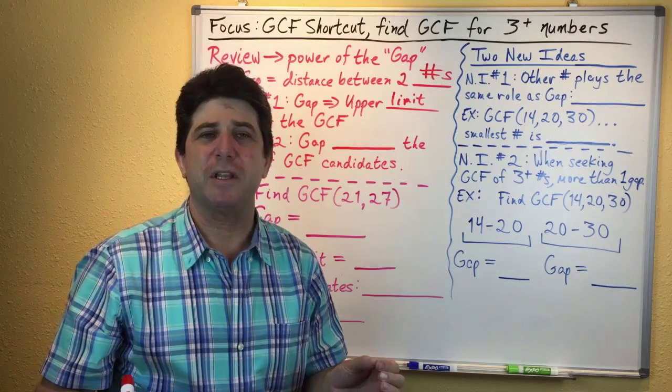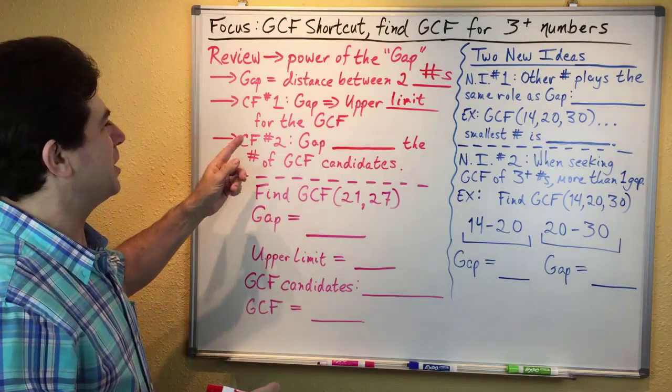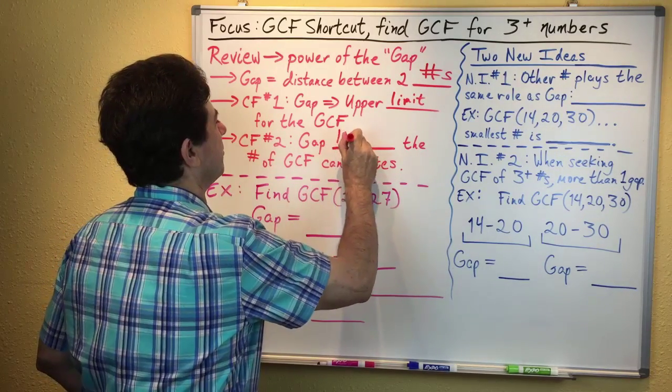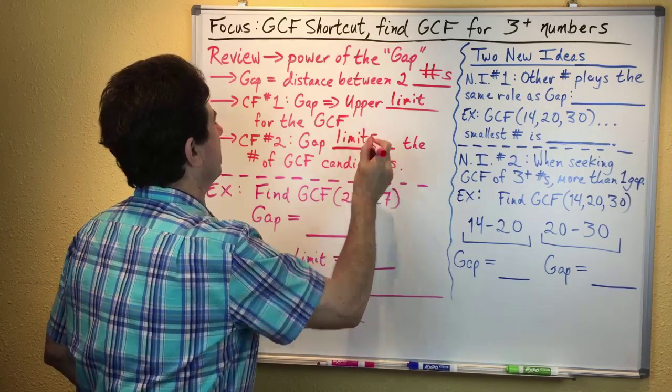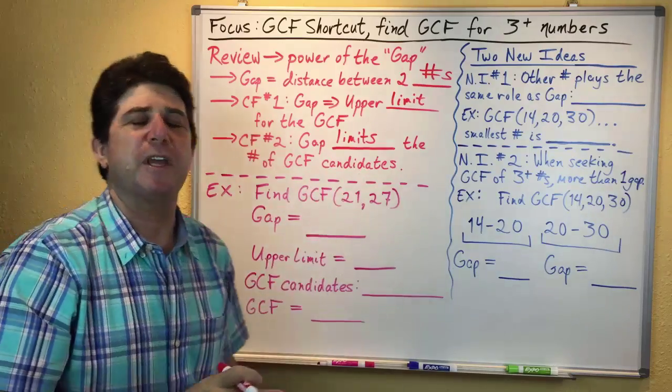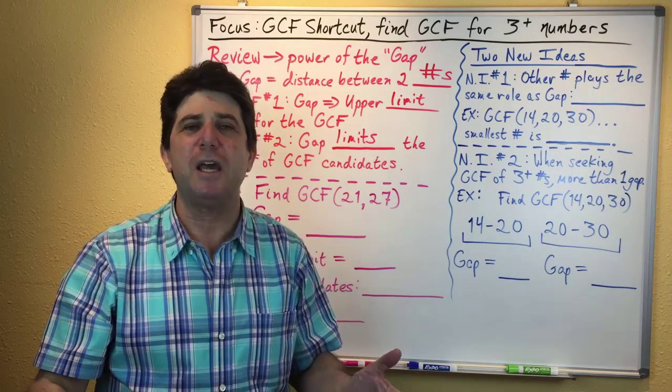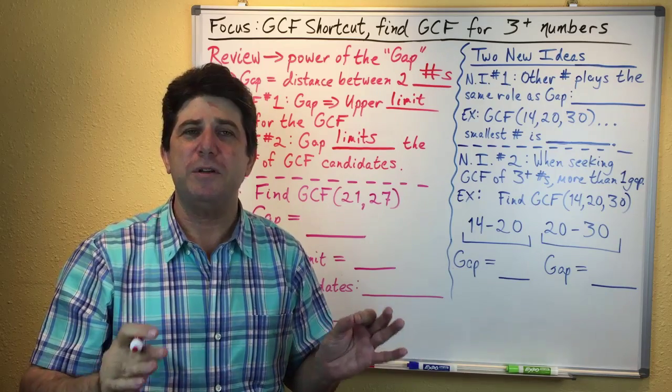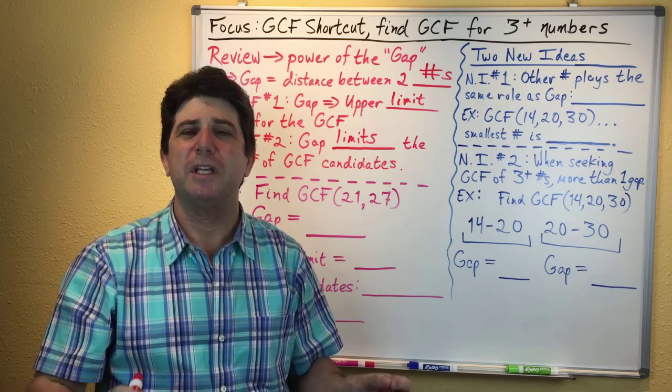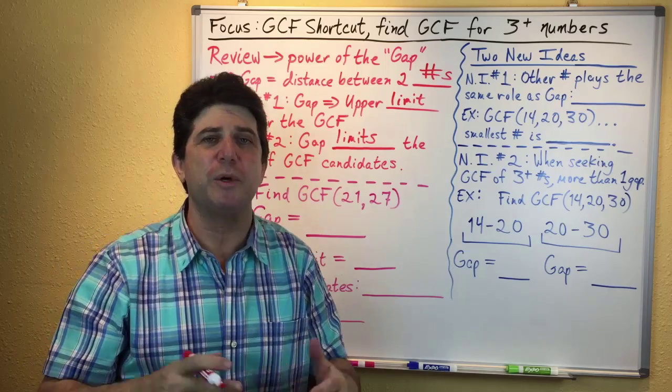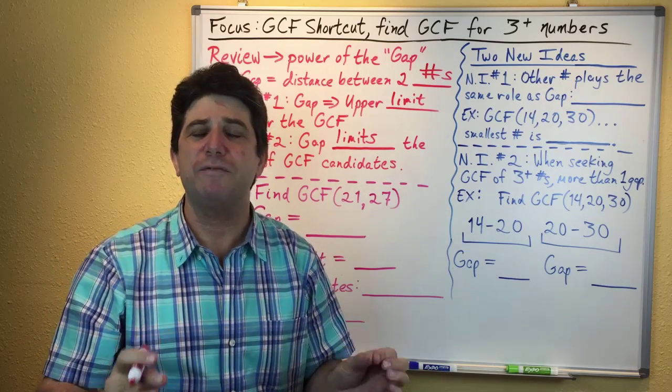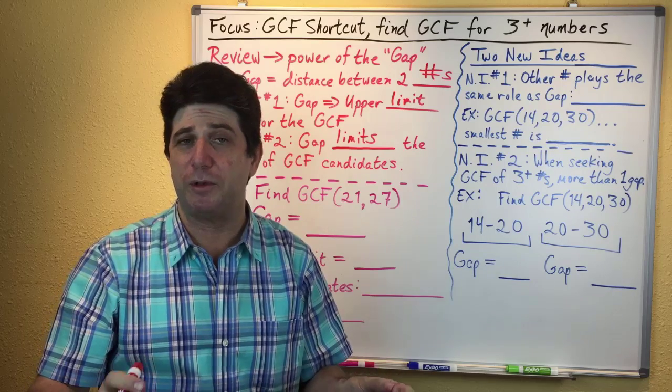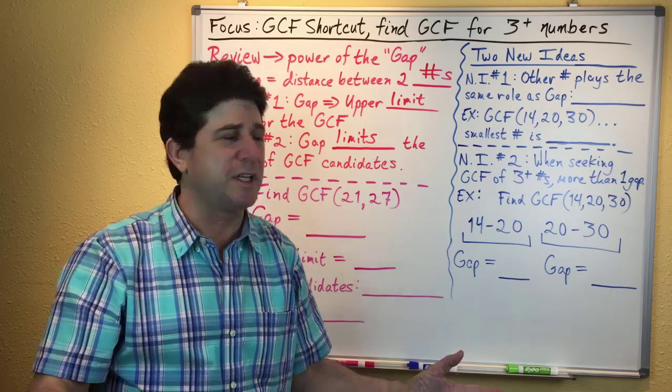Cool fact number two is that the gap also limits the number of GCF candidates that you need to check out. Once you know the gap, all you have to do is find the factors of the gap, and those factors are the only numbers that can possibly go into both of your numbers that you're finding the GCF for.